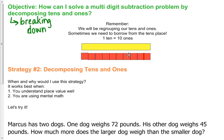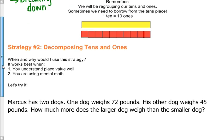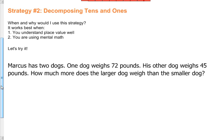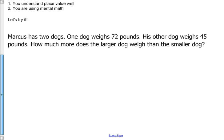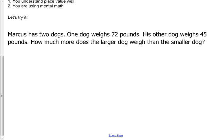So when do we use this strategy? We can use it when we like to work with place value and when we're trying to work with mental math. Let's try it with this problem. Marcus has two dogs. One dog weighs 72 pounds, his other dog weighs 45 pounds. How much more does the larger dog weigh than the smaller dog? So as good mathematicians do, we're going to circle the important information we need. The key numbers are 72 and 45, and we also have to decide our operation.